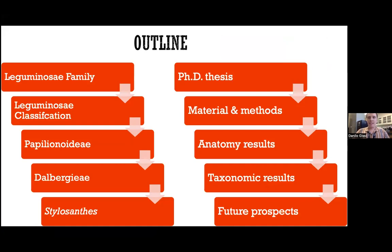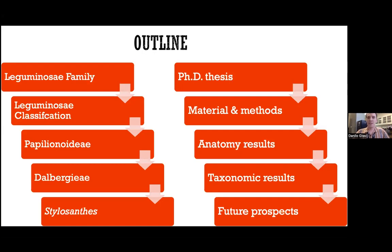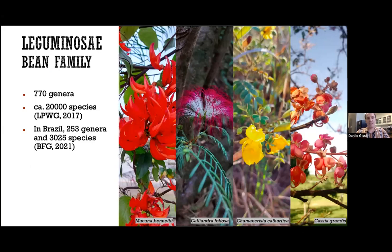My presentation will be divided into two sections. The first section I will give a little background on the legumes where the genus Stylosanthes is located, and after I will go into depth into my PhD thesis. The legume family is the bean family — one of the largest families of flowering plants in the world. It has around 770 genera and 20,000 species. In Brazil, it is the largest family of flowering plants, with 253 genera and 3,025 species.